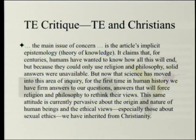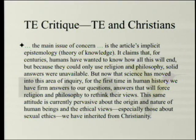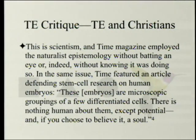The main issue of concern is the article's implicit epistemology — its theory of knowledge. It claims that for centuries humans have wanted to know how all this will end, but because they could only use religion and philosophy, solid answers were unavailable. But now that science has moved into this area of inquiry for the first time in human history, we have firm answers — answers that will force religion and philosophy to rethink their views. This same attitude is currently pervasive about the origin and nature of human beings, and the ethical values — especially sexual ethics — we've inherited from Christianity. This is scientism, and Time Magazine employed the naturalist epistemology without knowing it was doing so.